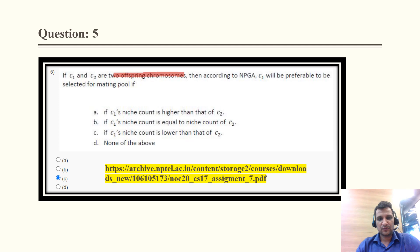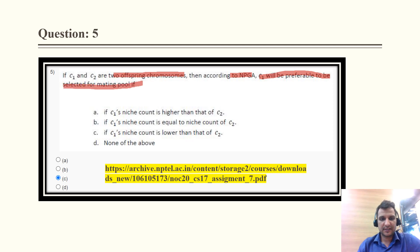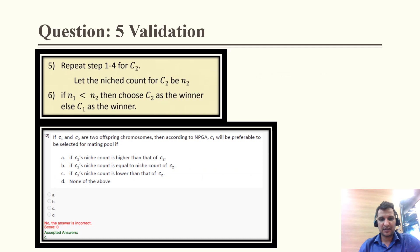Question 5: C1 and C2 are two offspring chromosomes. According to NPGA, C1 will be preferable to be selected for the mating pool. The options relate to niche counts: C1's niche count is higher than C2's, niche counts are equal, or C1's niche count is lower. The correct option is C.